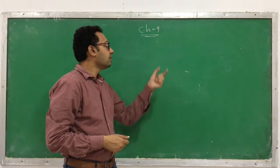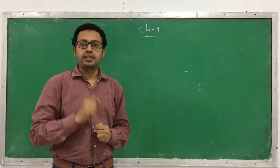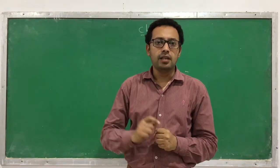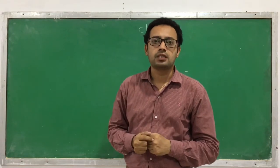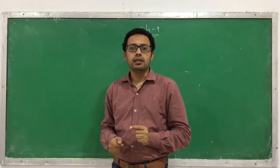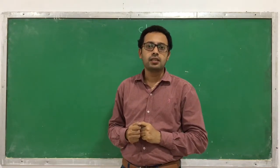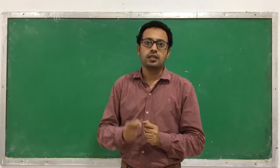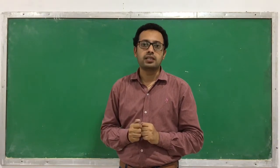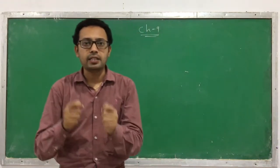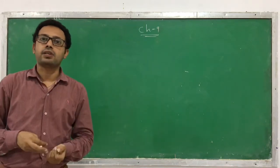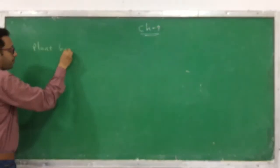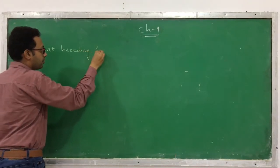Welcome back dear students and friends. We have started with chapter number nine: Strategies for Enhancement in Food Production. In the last session we were discussing plant breeding — its examples for certain purposes like plant breeding to improve the yield and plant breeding to generate a disease resistance variety. In today's session we are going to discuss plant breeding to generate insect and pest resistance variety.